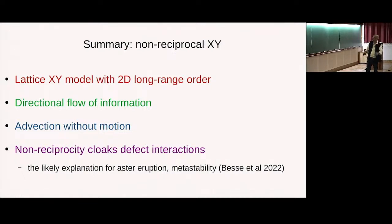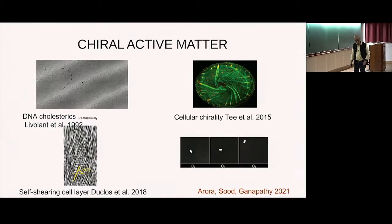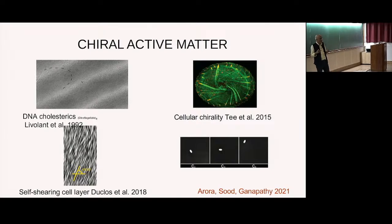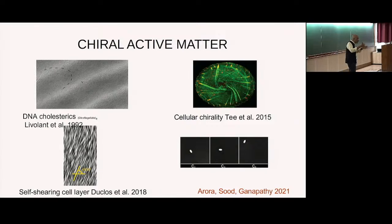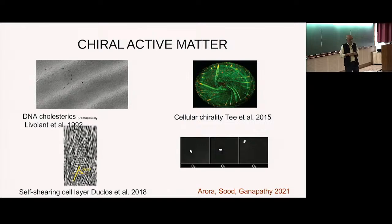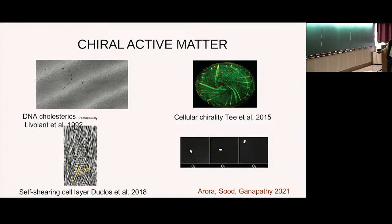Shumanthra's talk didn't have self-advection; he had motility, where the current of the concentration is proportional to the order parameter. So there's more than one way to approach this. All right — chiral active matter. Gareth did such a gorgeous job of describing chirality in active matter that I'll skip the introductory slide. This is work done with SJ, Gareth, and Ananyo.